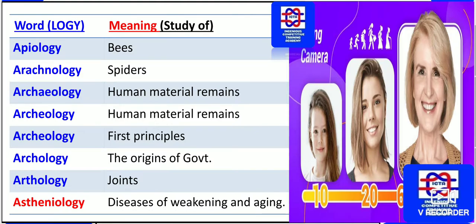The study of spiders is known as arachnology. Now we have archaeology — the study of human material remains, fossils, and so on. There are two related terms here. The archaeologist R.C. Banerjee is known for the Indus Valley Civilization discovery. These are all archaeologists.